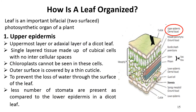Regarding the upper epidermis, it is the uppermost layer of the leaf. It is a single layer of tissue made up of cubical cells arranged closely with no intercellular space between them. Chloroplasts cannot be seen in these cells. Its outer surface is covered by a thin cuticle, which is comparatively thicker on the upper epidermis than the lower epidermis, preventing loss of water through the leaf surface.